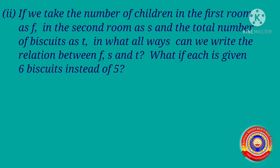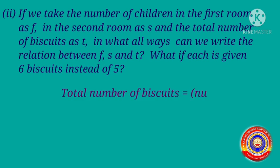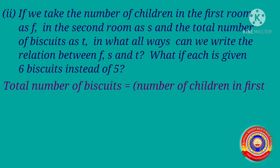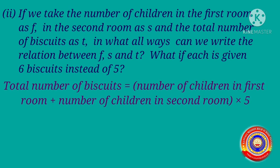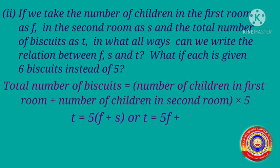If we take the number of children in the first room as F, in the second room as S, and the total number of biscuits as T, in what all ways can we write the relation between F, S and T? We can write the relation as: total number of biscuits is equal to number of children in the first room plus number of children in the second room, into 5. Using letters: T is equal to 5 into F plus S, or T is equal to 5F plus 5S.